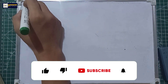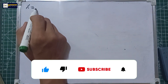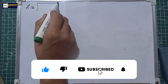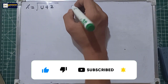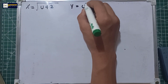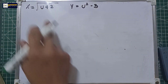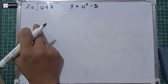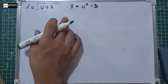Example number 4: we have x is equal to the square root of u plus 2, and for y, we have u squared minus 3. Our parameter here is letter u, so we will differentiate these functions with respect to u.